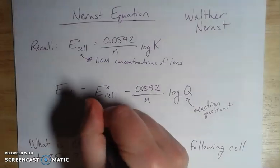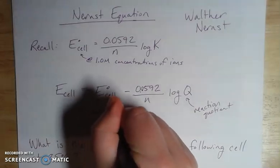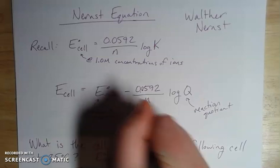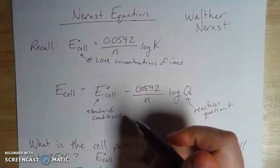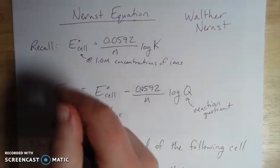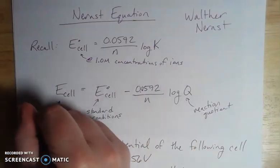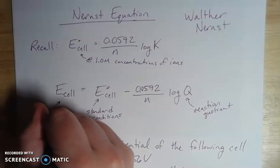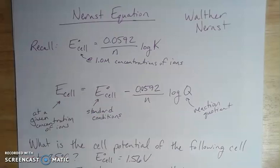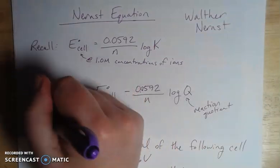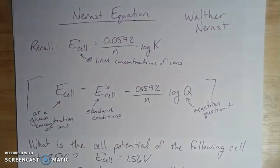This is just at potentially non-equilibrium concentrations. This is our standard, which we can tell with our degree symbol, which includes not only the temperature but the concentration of the ions. Here's at any given moment, so we'll put at a given concentration of ions here.